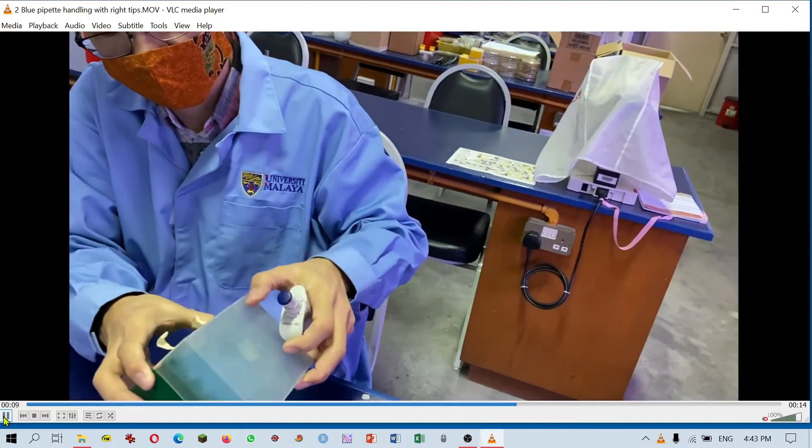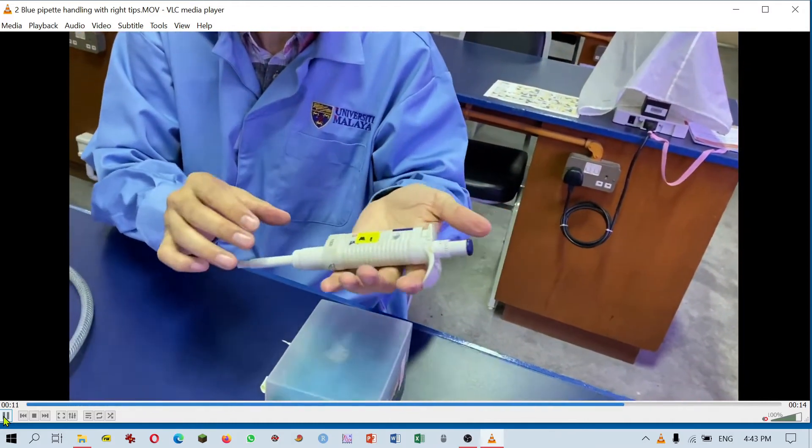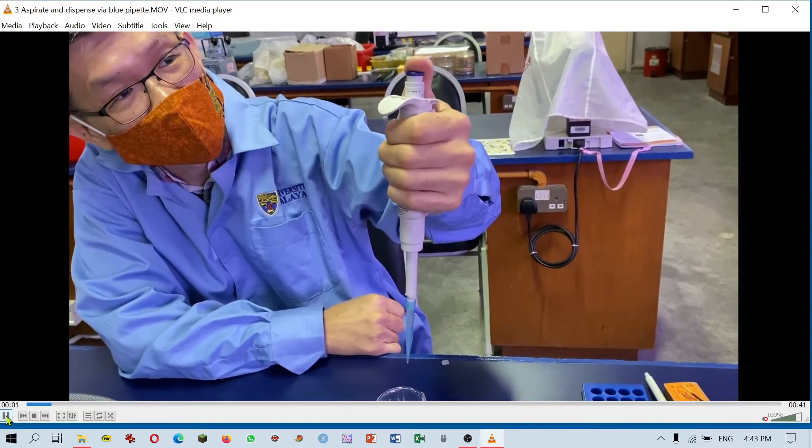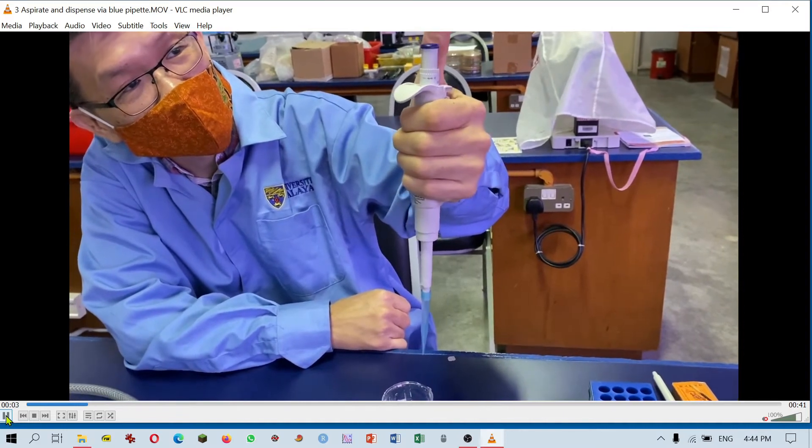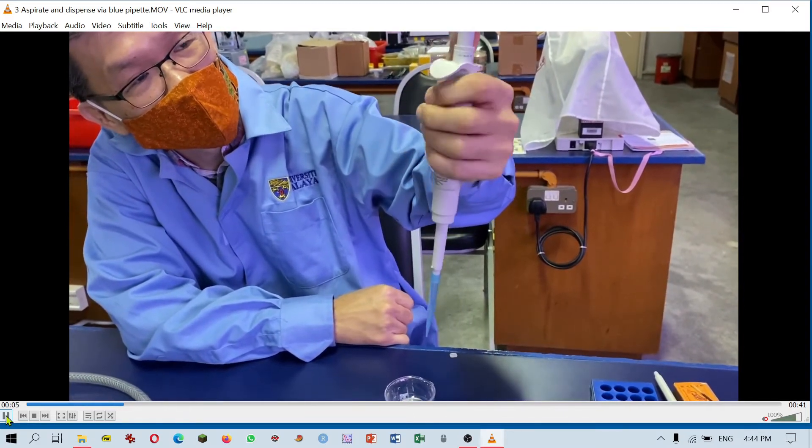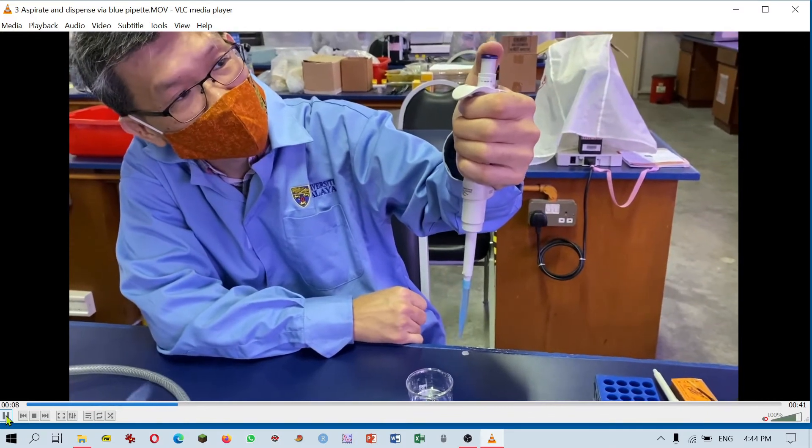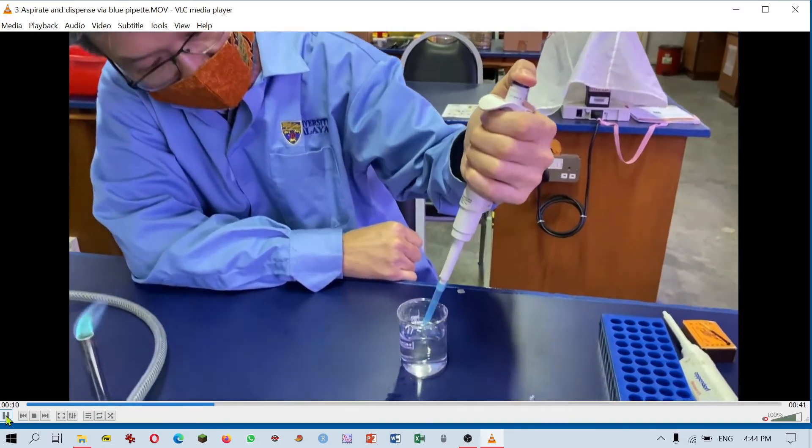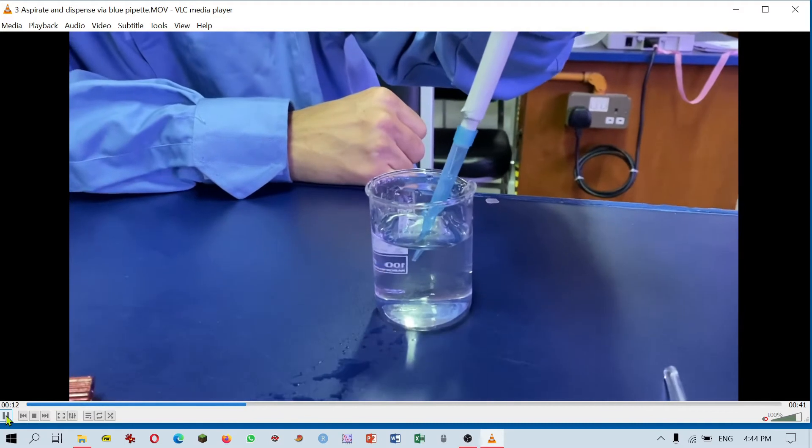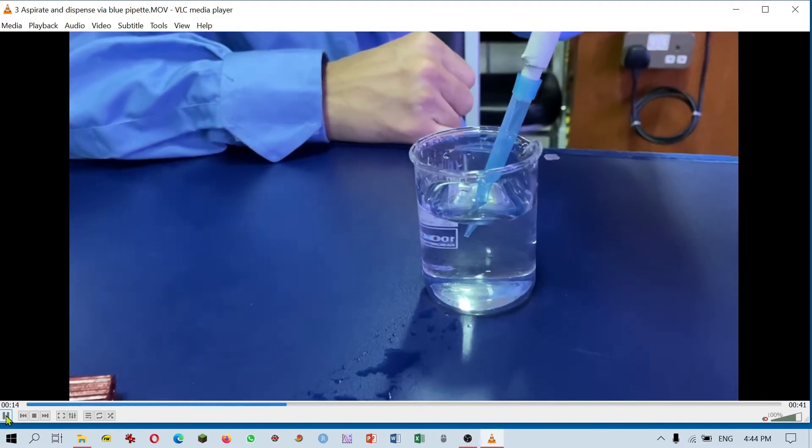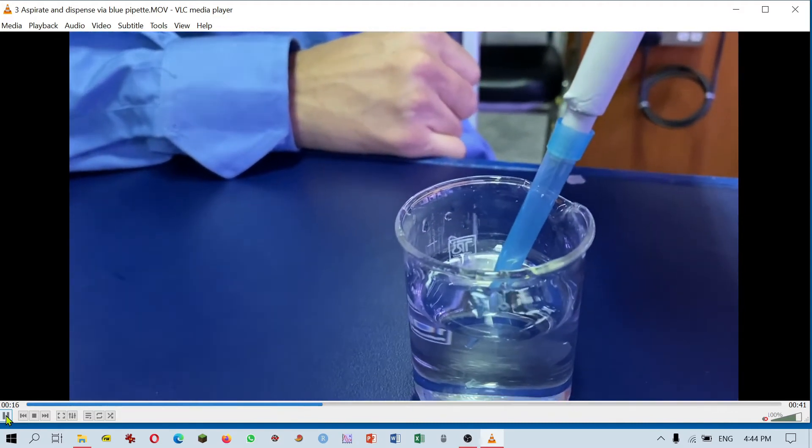As with all micropipettes, there are two stops. Take note that there are two stops. The first stop is for you to aspirate your solution by slowly releasing the button.